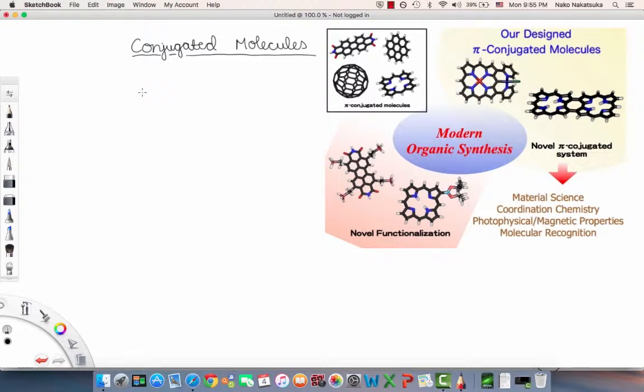Lone pairs, radicals, or other ions may be part of the system and the compound may also be cyclic, just like the benzene molecule. Conjugation is the overlap of one p orbital with another across an intervening sigma bond. We'll get into more detail in a second.